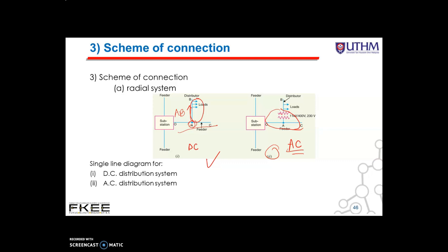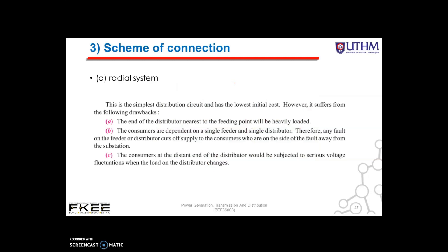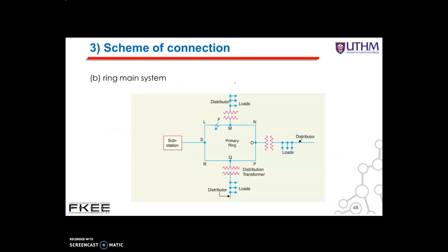The consumers are dependent on a single feeder and single distributor. Therefore, any fault on the feeder or distributor cuts off supply to consumers who are on the side of the fault away from the substation. The third drawback is that consumers at the distant end of the distributors would be subjected to serious voltage fluctuations when the load on the distributor changes. Due to these limitations, this system is used for short distances only.